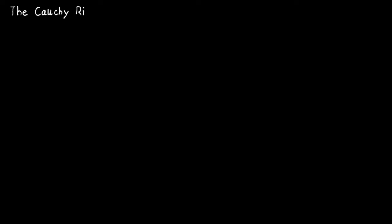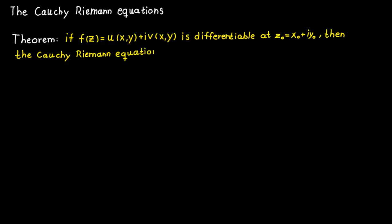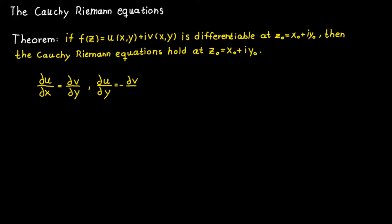The Cauchy-Riemann equations are first introduced in the Cauchy-Riemann theorem, which states that if a function is differentiable at some point in the complex plane, then the Cauchy-Riemann equations must be fulfilled at the same point. These equations are simply a relation between the partial derivatives of the real value functions u and v which make up our function f. This theorem can be more generally expanded to say that if a function is differentiable in a region, then the Cauchy-Riemann equations must also hold in the same region.